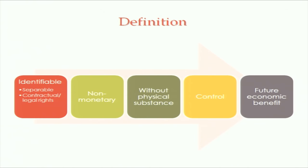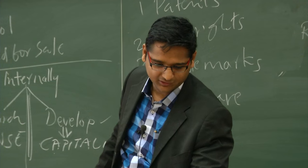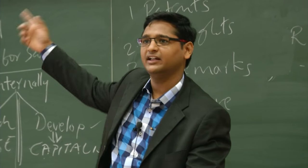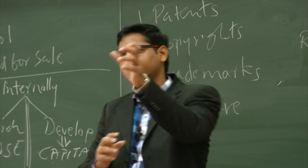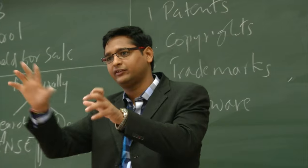The book definition of intangible assets: it says identifiable, non-monetary assets without physical substance, over which you have control and which give future economic benefit. Let us first try to cover examples, then go to the definition and explain what is identifiable and what each term means.